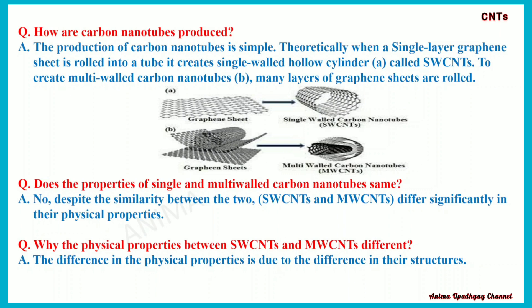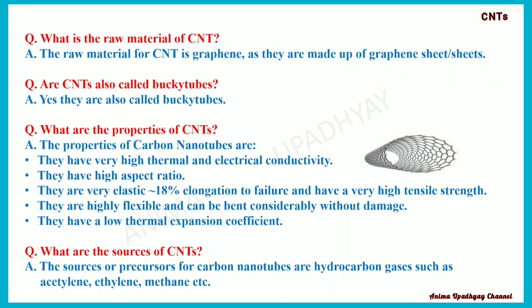Do single-walled and multi-walled carbon nanotubes have the same properties? No. Despite the similarity between the two, they differ significantly in their physical properties, due to the difference in their structures. What is the raw material of CNT? The raw material for carbon nanotubes is graphene, as they are made up of graphene sheet or sheets in single-walled and multi-walled carbon nanotubes.